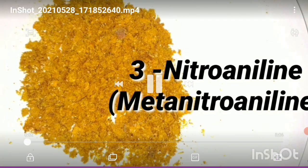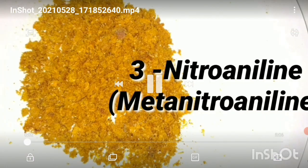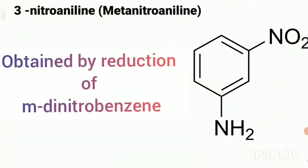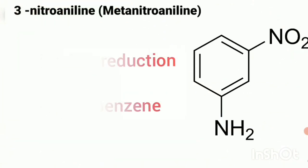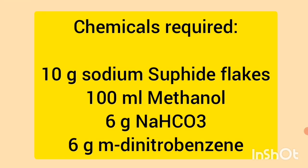Today we will discuss the preparation of M-nitroaniline. M-nitroaniline is a yellow crystalline compound which is prepared by reduction of M-dinitrobenzene. The chemicals we are using include sodium sulphide and NaHCO₃.